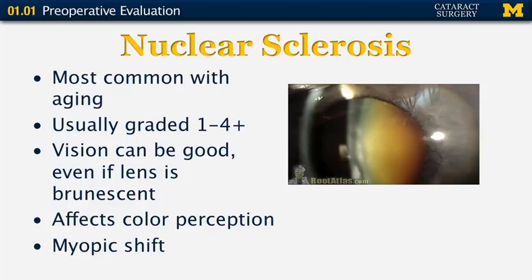Even with the yellowing in the lens, the vision can be good. It certainly does affect color perception. A lot of these patients will experience a myopic shift because of this.